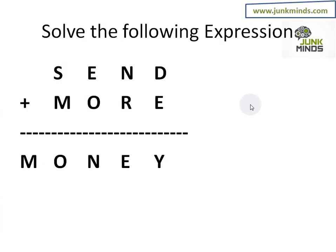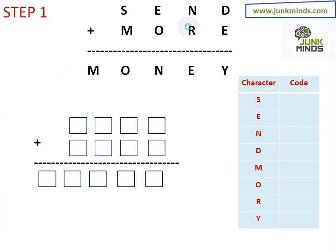So let us see how exactly we start with something like this. I will put the question here, and I have drawn a small table where I will be filling the values which have already been used, so that I can always keep track of what values have already been used.